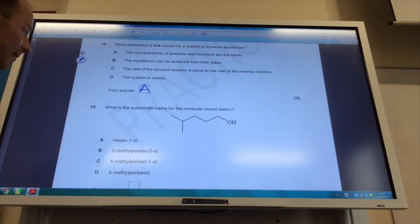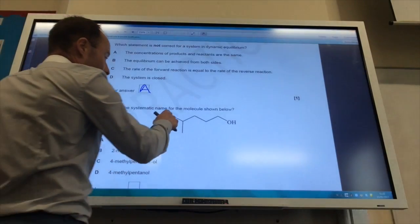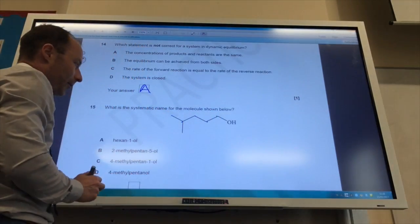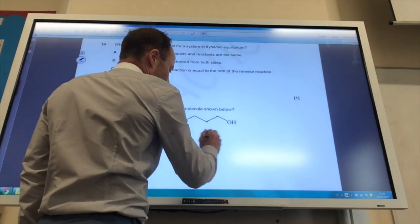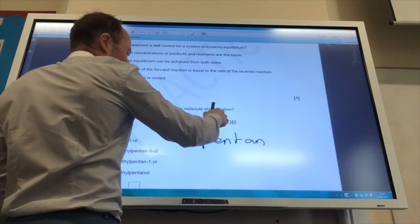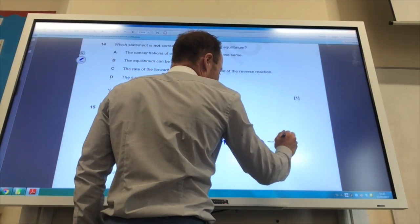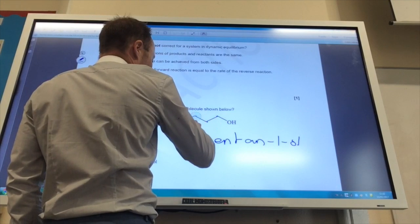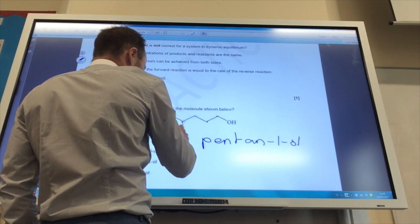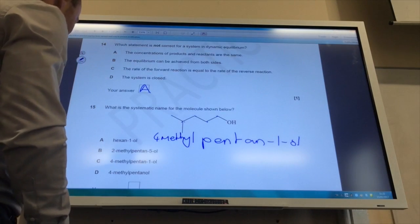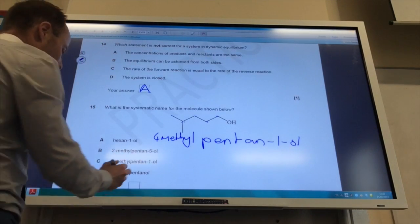What is the systematic name for the molecule shown below? I've got 1, 2, 3, 4, 5 carbons, so it starts with pent. Pentan, carbon number 1, 1-O, and then that's 1, 2, 3, 4, so 4-methyl pentan-1-ol is going to be C.